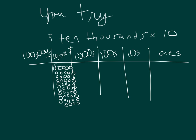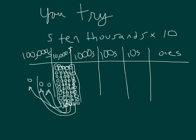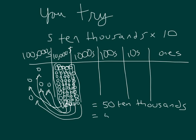Okay, those are all in the ten thousands place. What happens when we multiply by ten? Those ten thousands get ten times larger. Ten of those ten thousands equals one hundred thousand. Ten more of those equals one hundred thousand — and so on, five times. So five ten thousands times ten equals fifty ten thousands. Then we regroup those fifty ten thousands to the next place over. So fifty ten thousands is equal to five hundred thousands, which in standard form equals five hundred thousand.